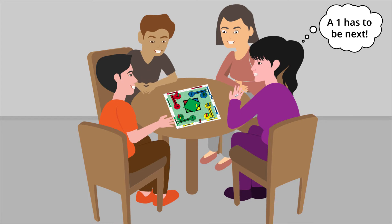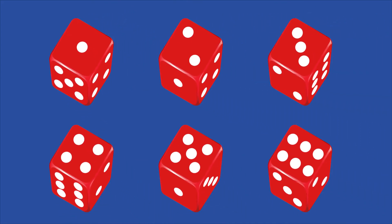You think to yourself: okay, it's been 8 turns since I've rolled a 1 — it has to be next. Each number on the die has a 1-in-6 probability of being rolled. After a slew of losses or undesirable rolls, why would this probability change and favor the rolling of a 1? It wouldn't, but we think it will because of The Gambler's Fallacy.